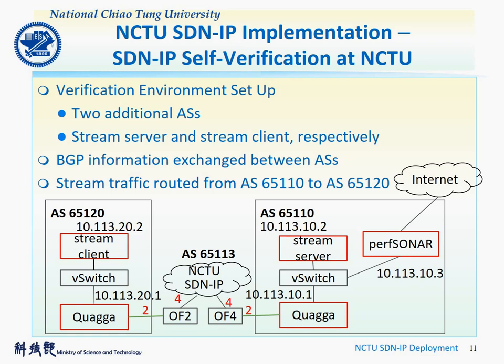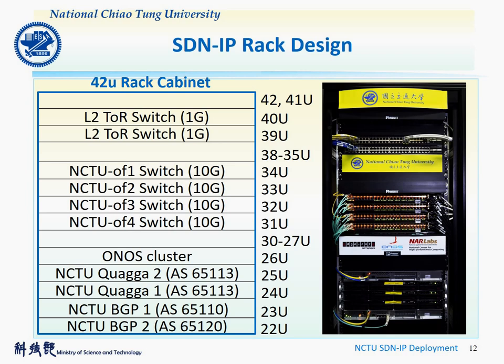After talking about deployment methods, let us look at a photo. This photo is the design of the NCTU SDNIP rack. It is a 42U rack. From top to bottom, there are two L2 type of rack switches for OpenFlow switches, one ONOS cluster server, two SDNIP Quagga servers, and two NCTU NetTest servers. The rack is built with support from ONLAB, the National Center of High-Performance Computing of Taiwan, and H-Core Network.